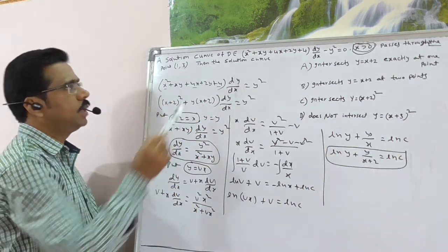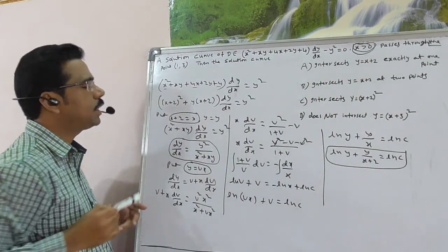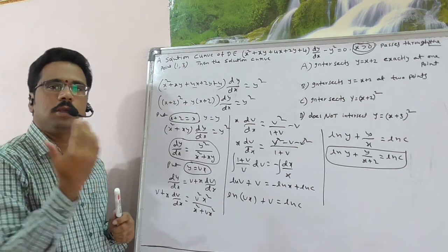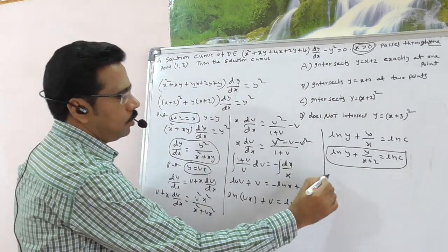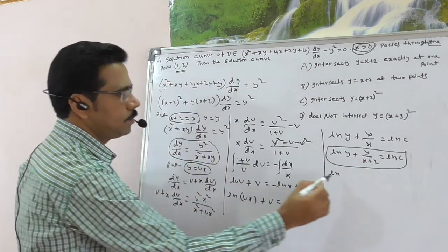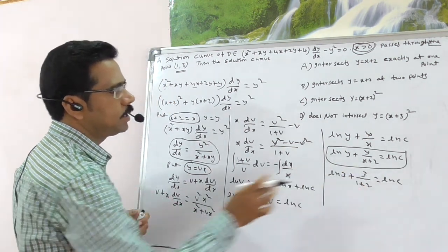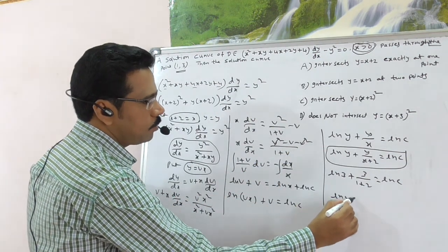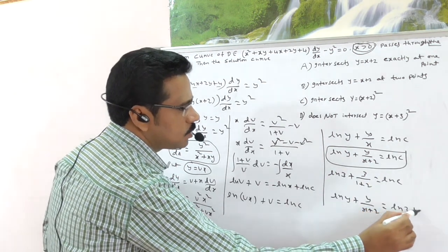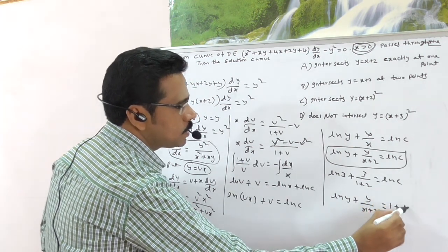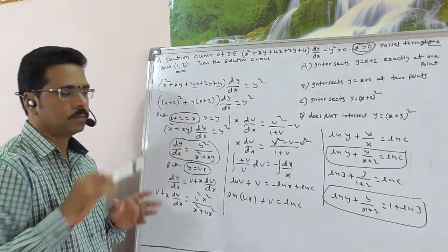The solution curve passes through (1, 3), so substitute x = 1, y = 3: log 3 + 3/(1+2) = log C, giving log 3 + 1 = log C. Therefore the specific solution curve is: log y + y/(x+2) = 1 + log 3.